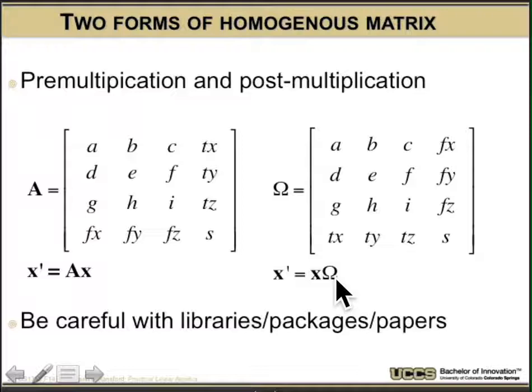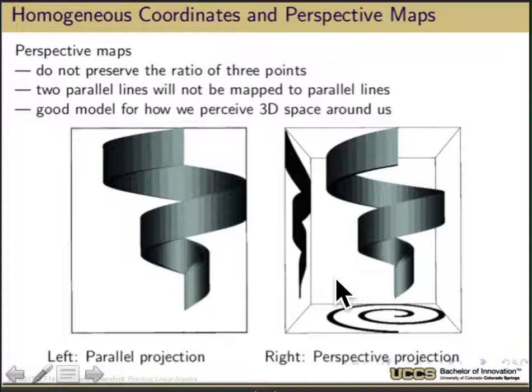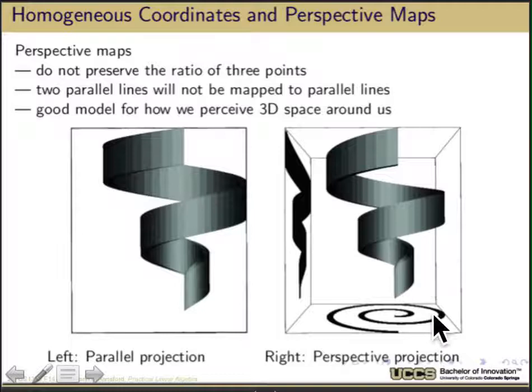Important properties of perspective maps: they do not preserve ratios of three points, and parallel lines will not be mapped to parallel lines — in general, parallel lines will converge. It's a good model for how we perceive 3D space around us. With parallel projections, lines remain parallel and shapes are retained. With a perspective projection, shapes are no longer preserved but they look more natural to us.